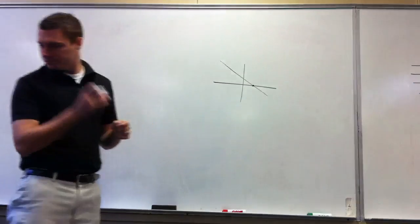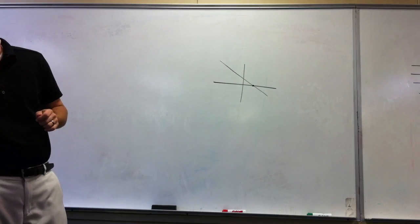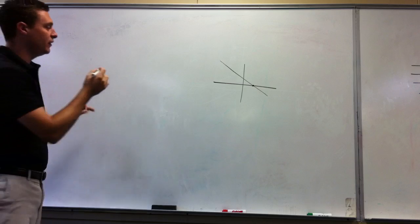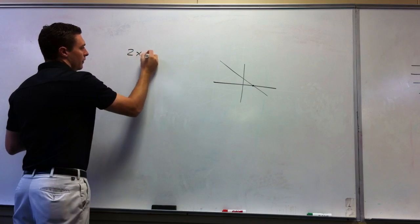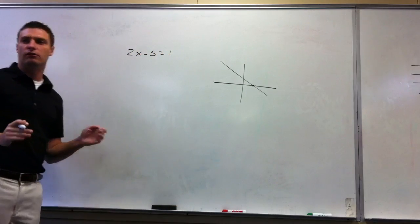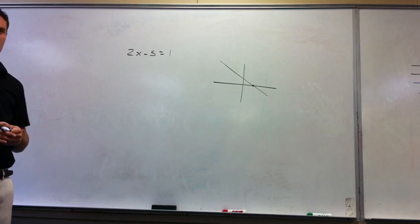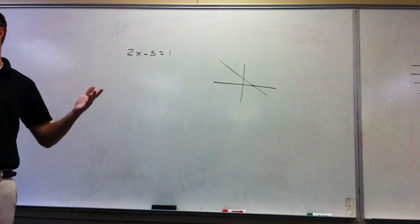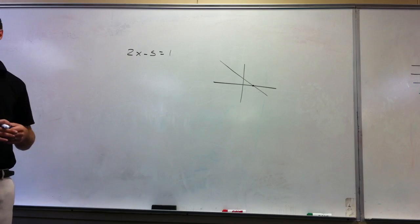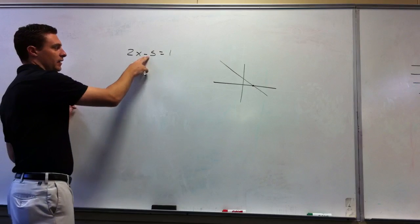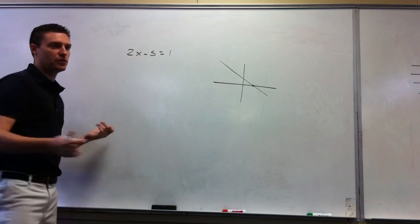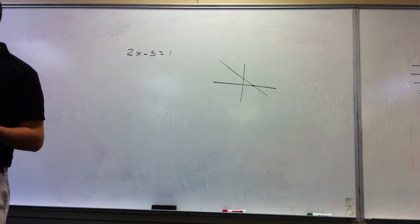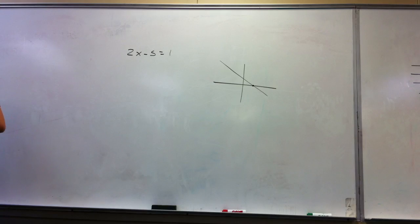Example 1: 2x minus 5 equals 1. This is really easy to solve, right? If we solve for x, we add 5 to both sides, divide by 2, and we can see that the answer would be 3. We add 5 to get 6, divide by 2 to get 3.